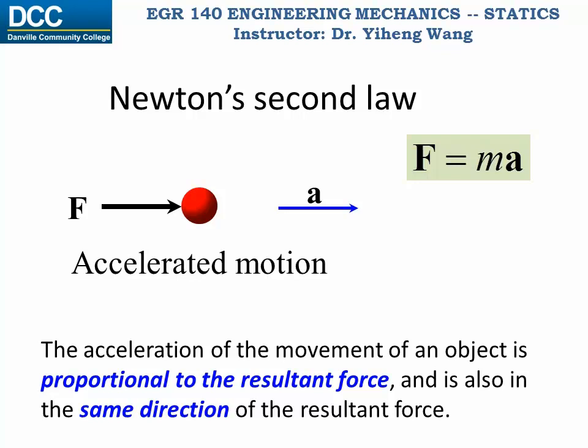We can also rewrite this equation into the form A equals F over M. In this form, we can not only see that acceleration is caused by the force, but more importantly, we can see that the mass of the object acts as a resistance to motion. In other words, the mass of the object is an inherent property to resist change in its state of motion.